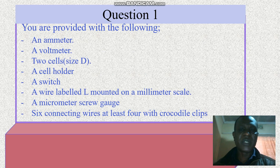Now question one. You are provided with the following: an ammeter, a voltmeter, two cells size D, a cell holder, a switch, a wire labeled L mounted on a millimeter scale, a micrometer screw gauge, six connecting wires at least four with crocodile clips.